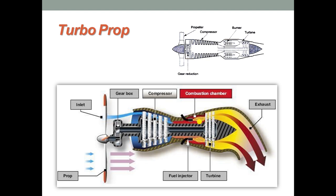Moving on to the next one: the turbo prop. The figure shows a turbo prop system employed in aircraft. Here, expansion of gases takes place partly in the turbine and partly in the nozzle — about 80 percent expansion in the turbine and 20 percent in the nozzle. The power developed by the turbine is consumed in running the compressor, as the turbine and compressor are mounted on the same shaft. There is a propeller — a fan-like structure called the prop — at the entrance of the system, which gives forward motion together with the nozzle jet.